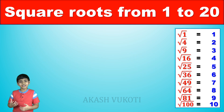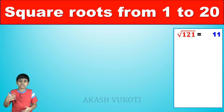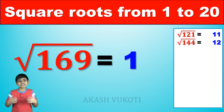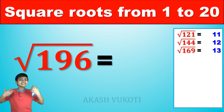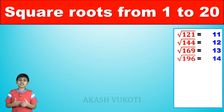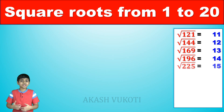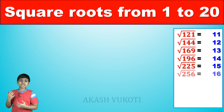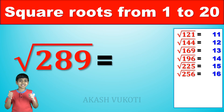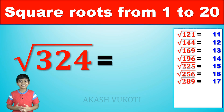The square root of 121 is 11. The square root of 144 is 12. The square root of 169 is 13. And the square root of 196 is 14. The square root of 225 is 15. The square root of 256 is 16. The square root of 289 is 17. The square root of 324 is 18.